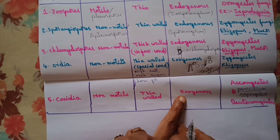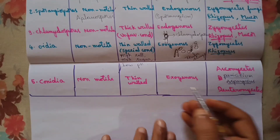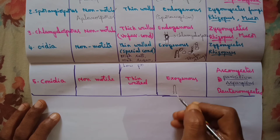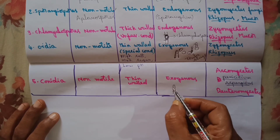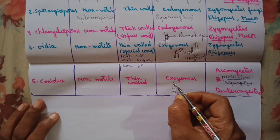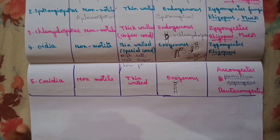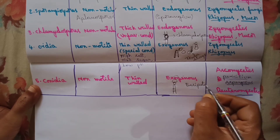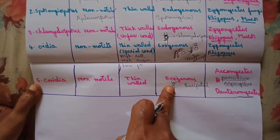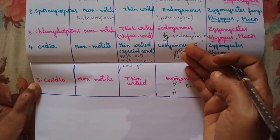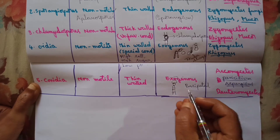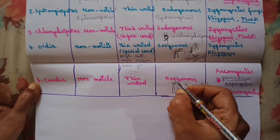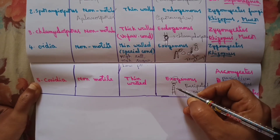The next type of asexual spores are conidia. These are non-motile, thin-walled spores that are exogenous in origin because they are formed above special hyphae called conidiophores. Above the conidiophore, conidia are cut off. The arrangement of conidia over the conidiophore is basipetal — the oldest conidium is towards the apex (tip) and the youngest conidium is towards the base.